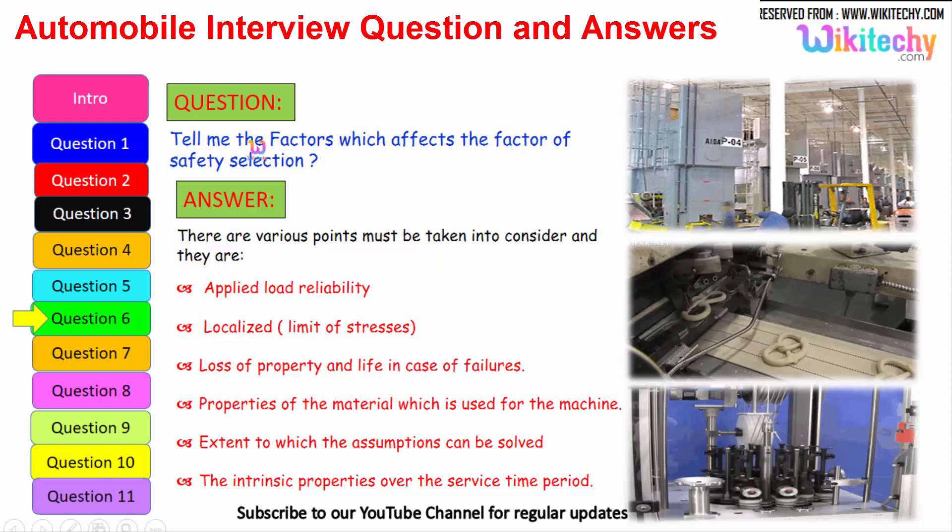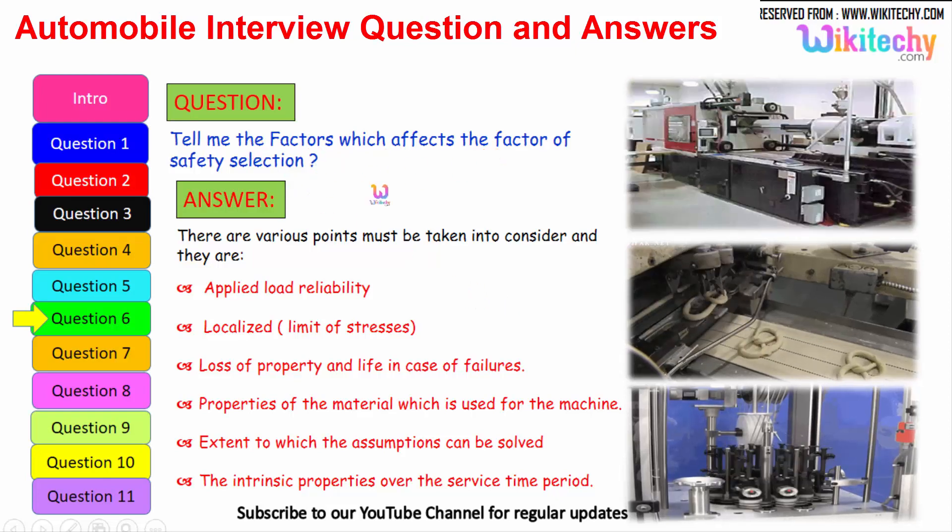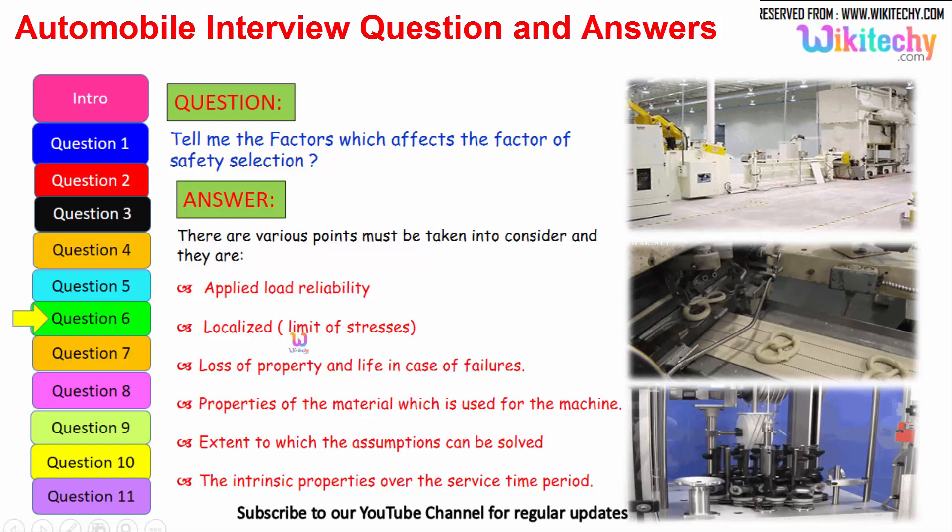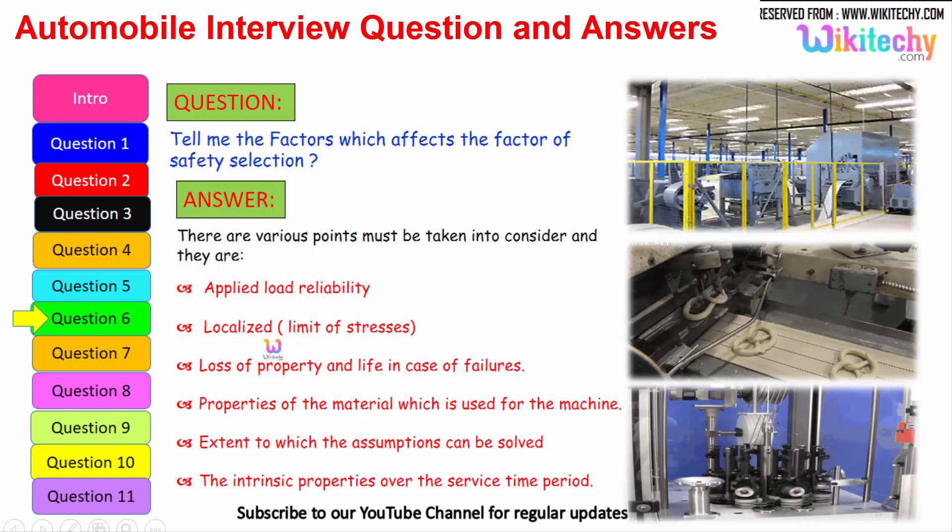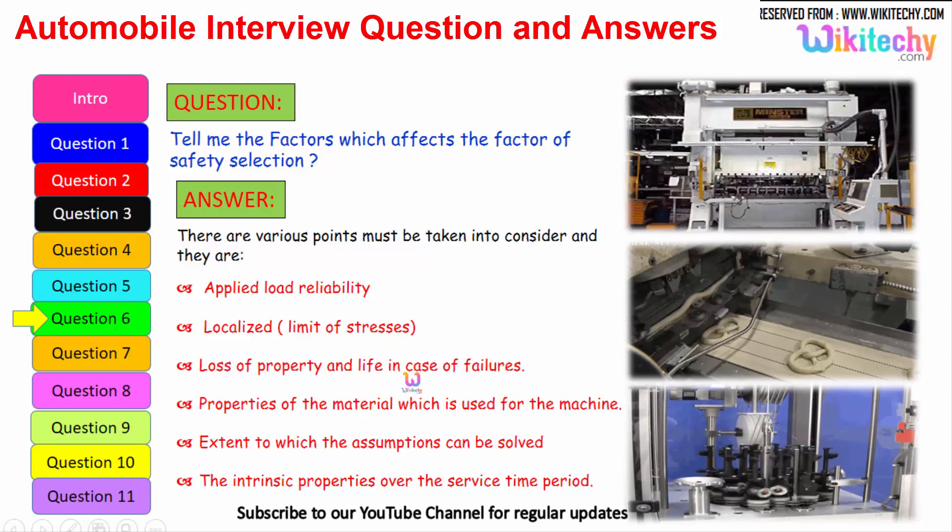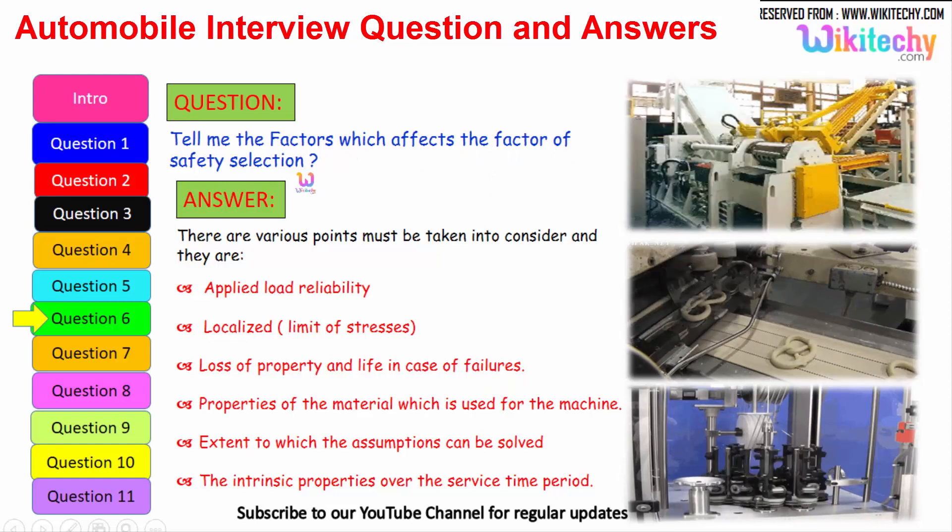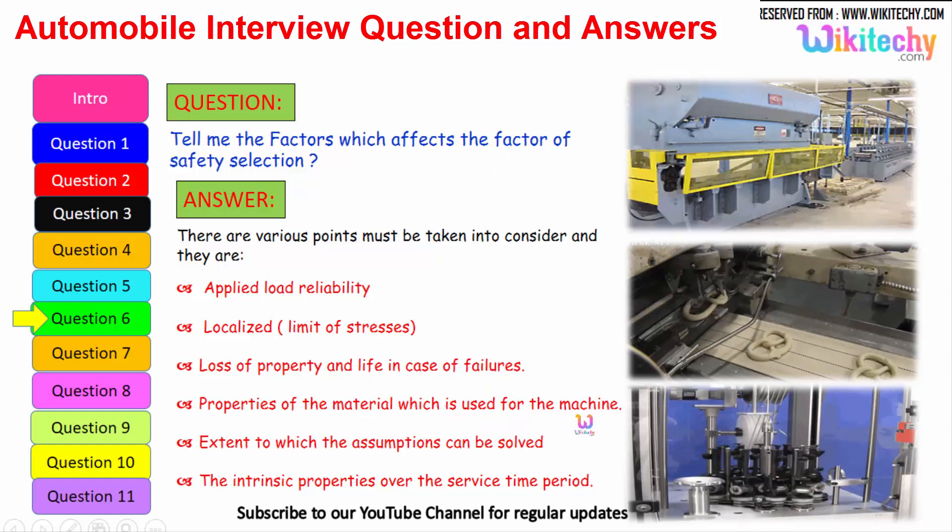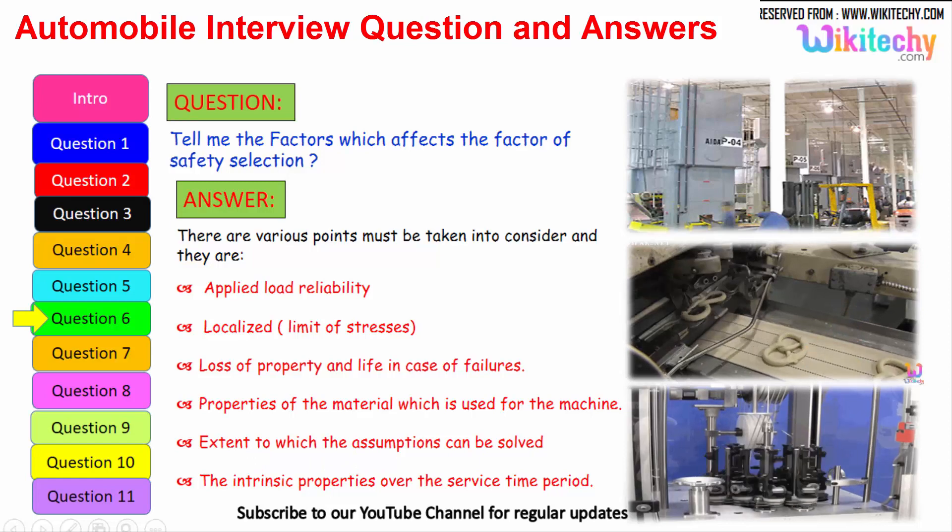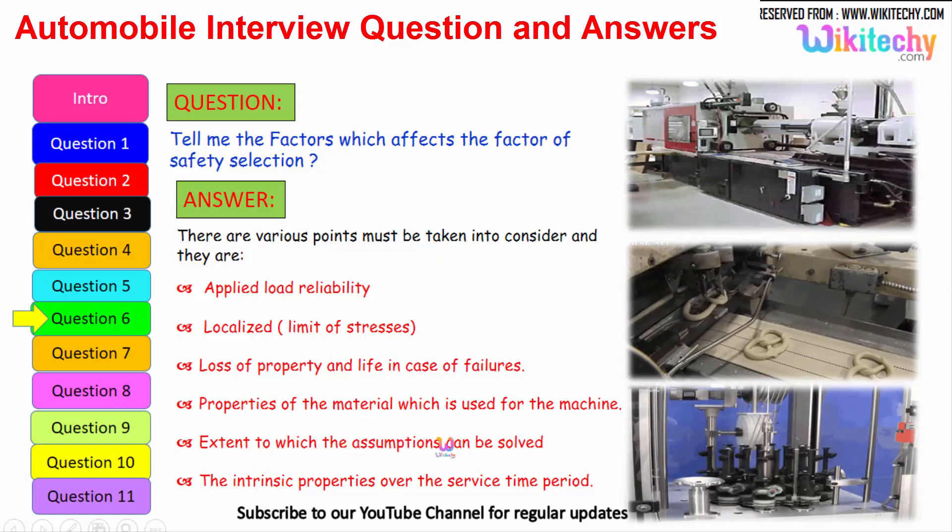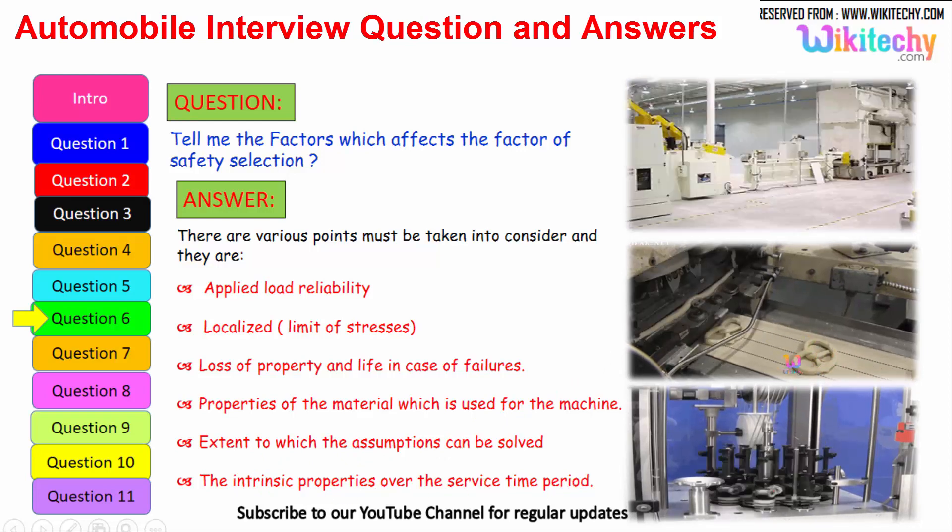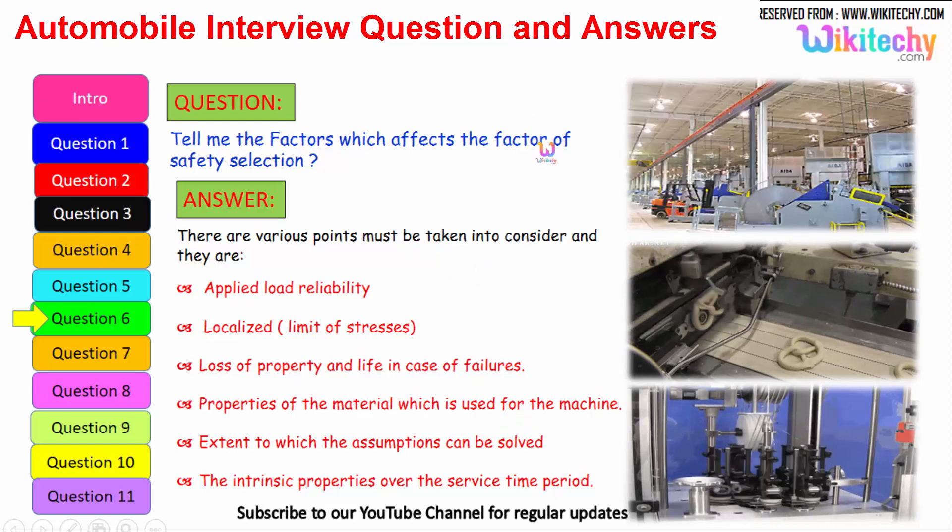Now let us see the factors which affect the factor of safety selection. Here are some of the factors: applied load reliability, limit of stresses, loss of property and life in case of failures. This is a very important factor you should understand on safety selection. Properties of the material which is used for the machine, what kind of material you are using. The extent to which the assumptions can be solved, how much it will extend, compress or something like that. Everything to be solved. The intrinsic property over the service time period, how it will sustain. Everything we need to manipulate for the factor of safety selection.